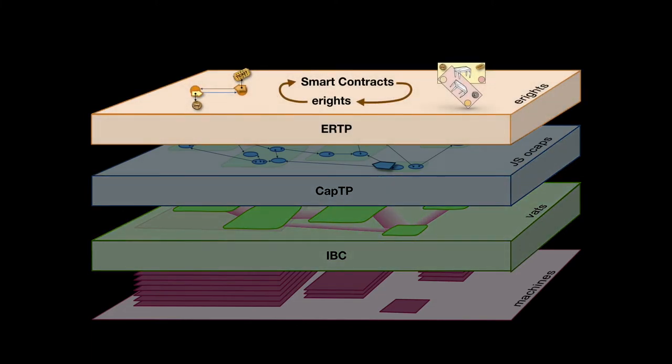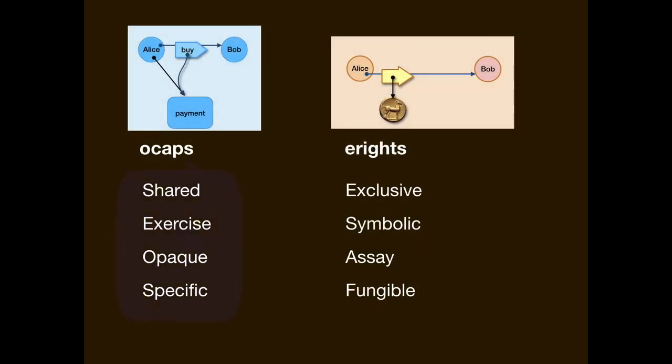Okay, now let's shift our attention to ERTP, the Electronic Rights Transfer Protocol. So electronic rights have a rich taxonomy. Particular kinds of electronic rights can differ from each other in a number of dimensions. I'll only mention two from this table: shared versus exclusive. At the object level, when Alice commits Bob to invoke Carol, or in this case this payment object, Alice still has that permission. So Alice is sharing that permission. Whereas money, for example, is exclusive.